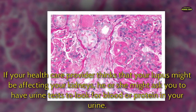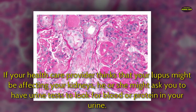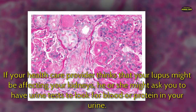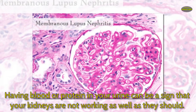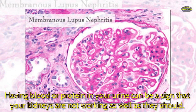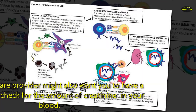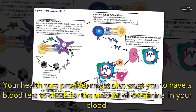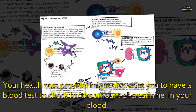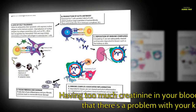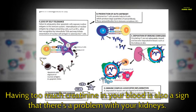If your health care provider thinks that your lupus might be affecting your kidneys, he or she might ask you to have urine tests to look for blood or protein in your urine. Having blood or protein in your urine can be a sign that your kidneys are not working as well as they should. Your health care provider might also want you to have a blood test to check for the amount of creatinine in your blood. Having too much creatinine in your blood is also a sign that there is a problem with your kidneys.